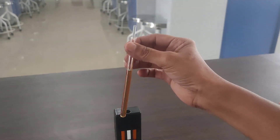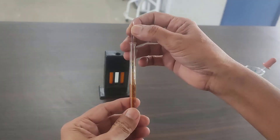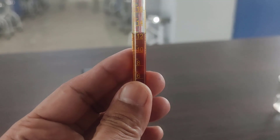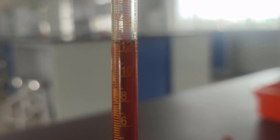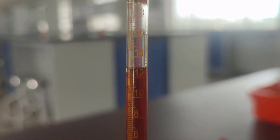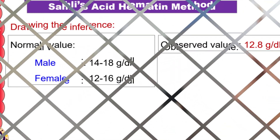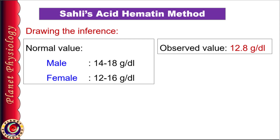Once the color matches exactly with the standard, take out the hemoglobin tube, lift the stirrer above the solution, and read the gram percent on the yellow scale. Note the reading where the lower meniscus of the solution corresponds to the scale, and record this value as the hemoglobin content in the blood. If you are not sure whether the color is exactly matched, note the reading and add one more drop of distilled water, mix, and match the color again. If it is perfectly matching, record that value; but if the color is lighter, take the previous reading as your hemoglobin content. In this case, the hemoglobin content is 12.8 gram per deciliter.